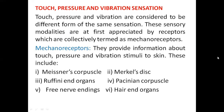Coming to touch, pressure and vibration sensation — touch, pressure and vibration are considered to be different forms of the same sensation. These sensory modalities are at first appreciated by receptors which are collectively termed as mechanoreceptors. For any sensation to be perceived, it has to be appreciated through the sensory receptors, which carry this information through a pathway to the brain. The receptors which appreciate touch, pressure and vibration are collectively known as mechanoreceptors.